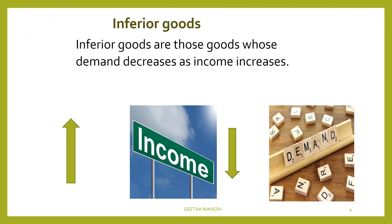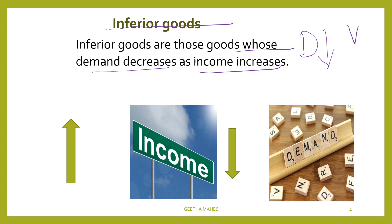Next is inferior goods. Inferior goods are those goods whose demand decreases as income increases. So this is reverse. The demand is decreased because of the increase in consumer's income. The consumer's income increases, and because of that the demand is decreased.